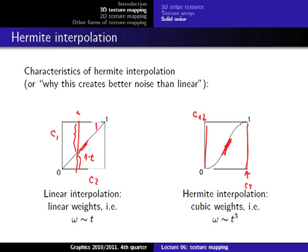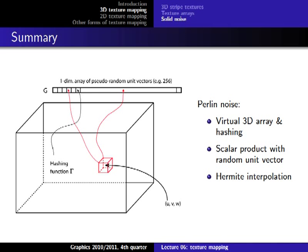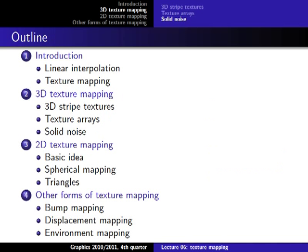That's the summary of Perlin noise — it looks complex at first but there's not that much behind it. The fun part is implementing it and playing around with parameters to create different visualizations and patterns. That covers 3D texture mapping; after a break we will talk about 2D textures.